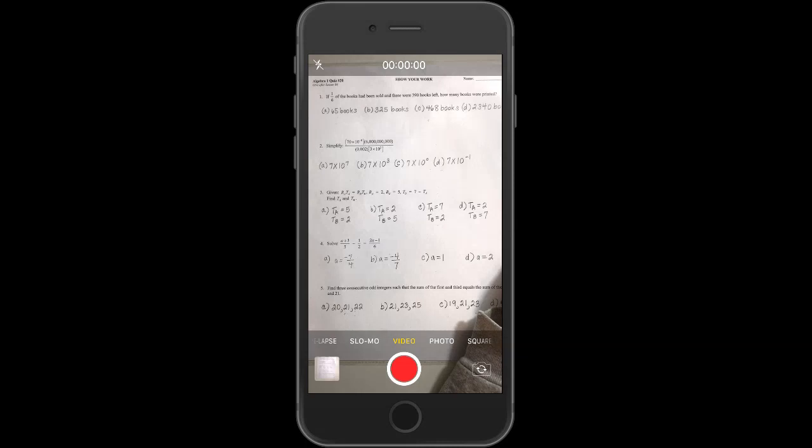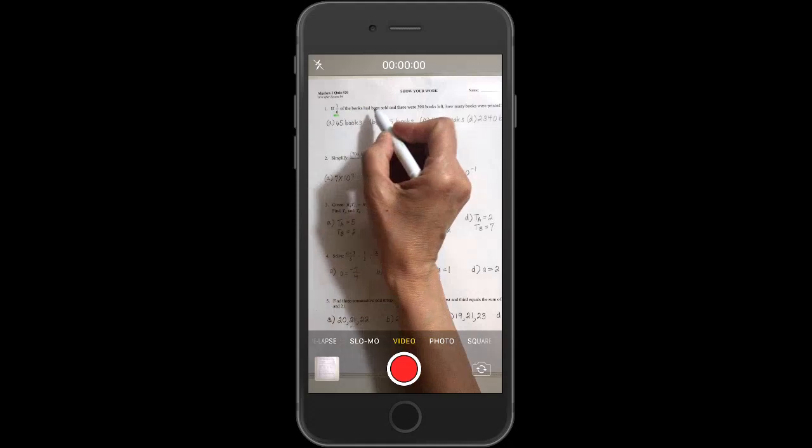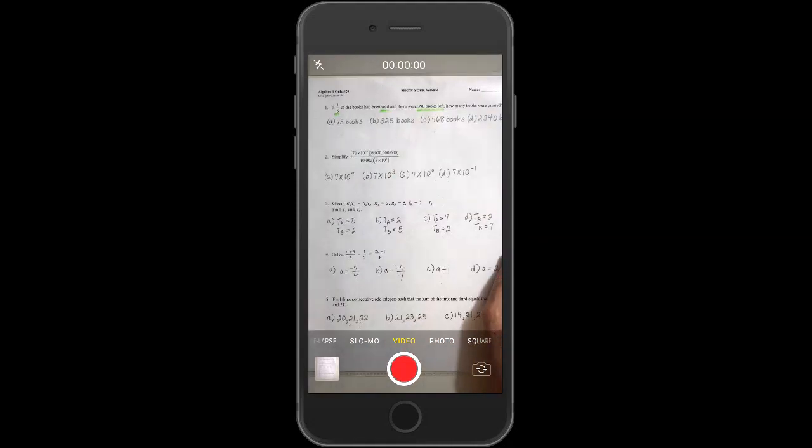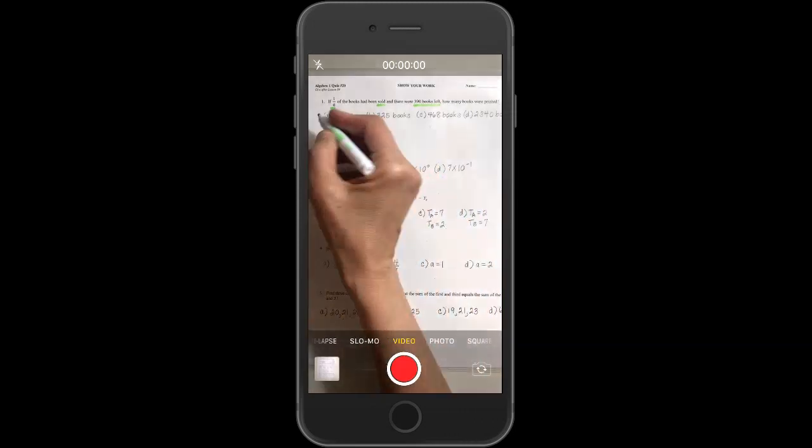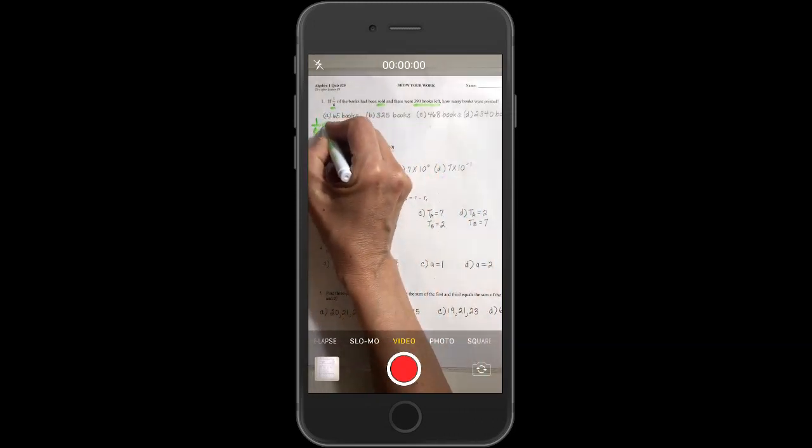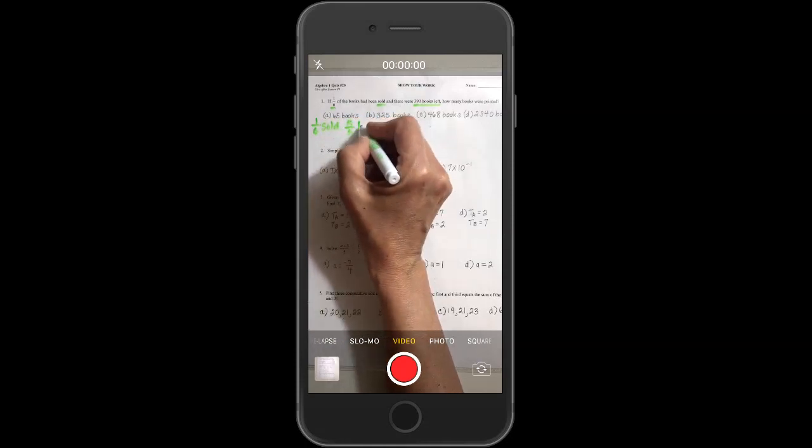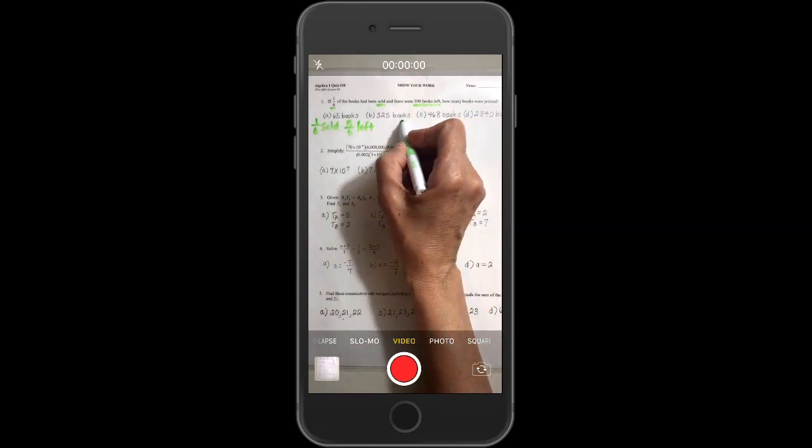Probably if you missed number one, it's because of reading. It said one-sixth of the books had been sold and there were 390 books left. Now, that doesn't mean one-sixth of 390 or one-sixth of the total is 390. You have to think a little bit that one-sixth had been sold, so five-sixths are left. And so, five-sixths of the total is what is left and that is 390.